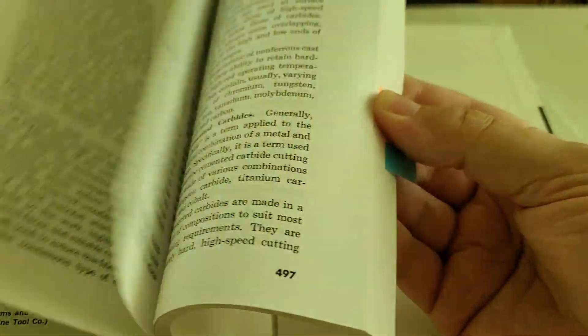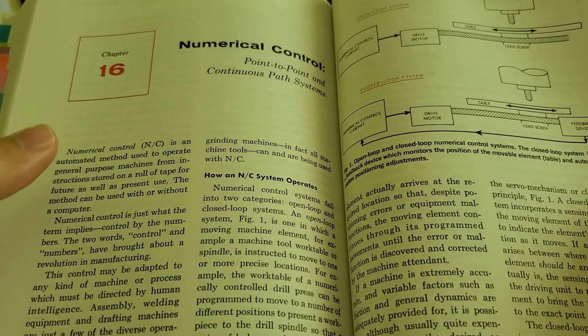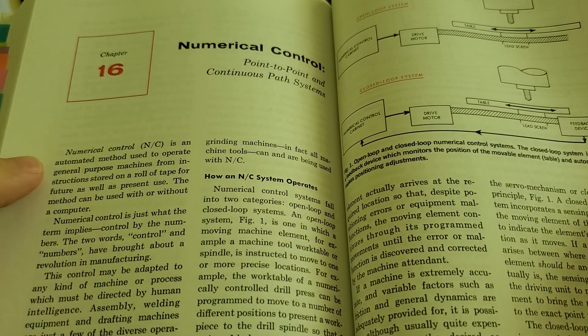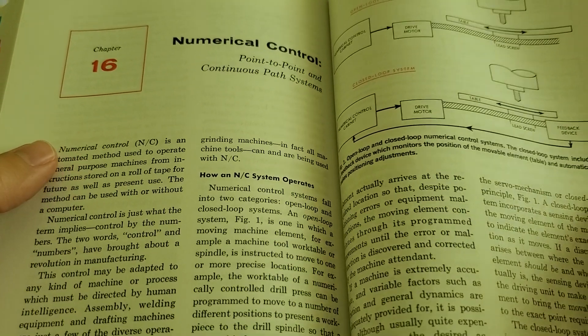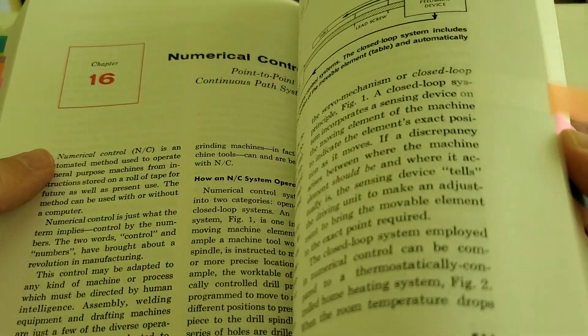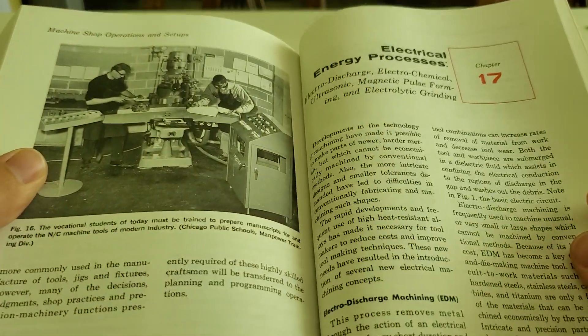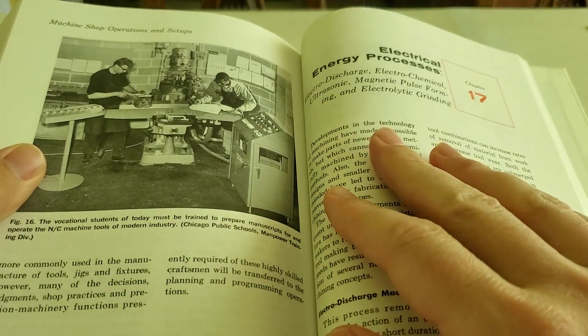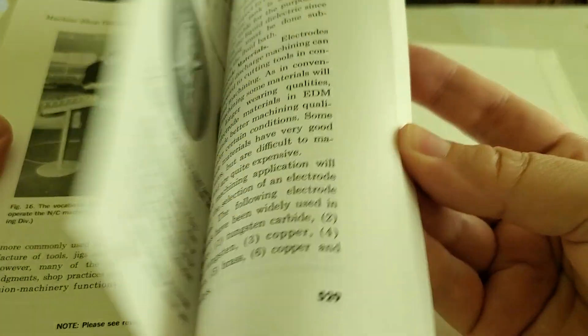It does actually go in and cover a bit on numerical control. And this is where the book really shows its age because a lot has changed since 1973. Of course, it talks about using punch cards and magnetic tape back here. So obviously, that's not true anymore.